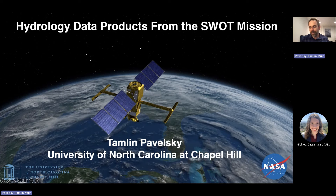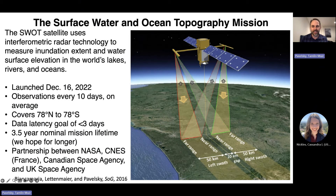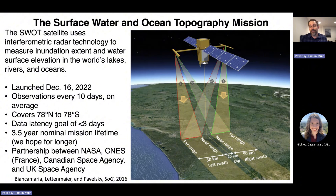If you're here, I'm guessing you might have heard about the SWOT mission already, but I want to make sure we're all on the same page before we start. SWOT stands for the Surface Water and Ocean Topography Mission. The SWOT satellite uses interferometric radar technology, and it's designed to measure two things: where water is — inundation extent — and what the elevation of water is — water surface elevation. It's designed to do that in the world's lakes, rivers, and oceans.